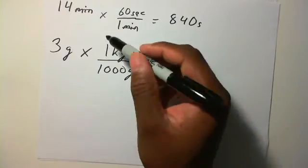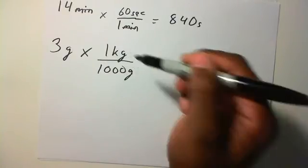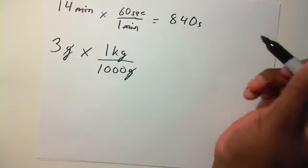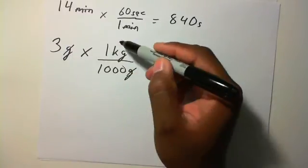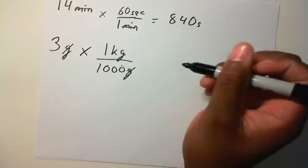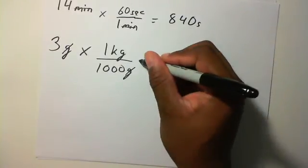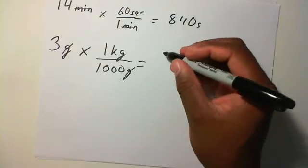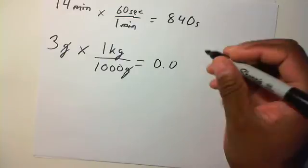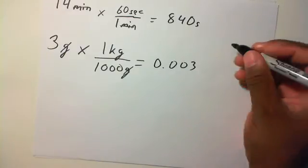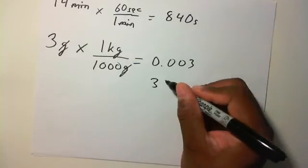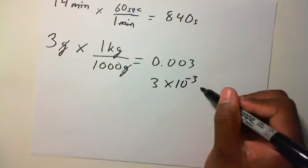What you want to get rid of, you put on the bottom. What you want, you put on the top. These two units here cancel. The grams cancel. And you're left with three times one over a thousand kilograms, which equals 0.003. In scientific notation, this is 3 times 10 to the negative 3 kilograms.